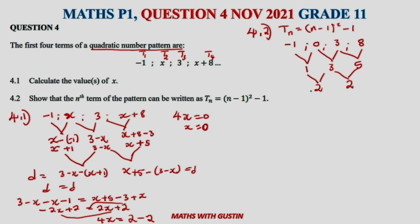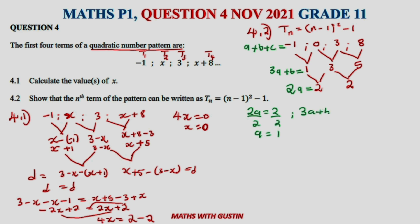So: 2a equals 2, therefore a equals 1. Then 3a plus b equals 1, and since a equals 1, we get 3 plus b equals 1, therefore b equals 1 minus 3 equals negative 2.